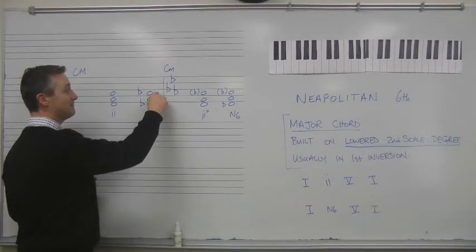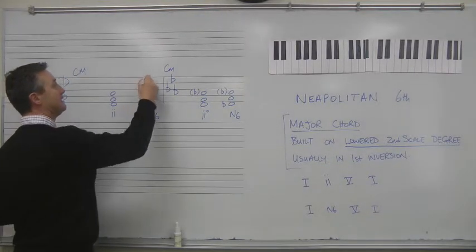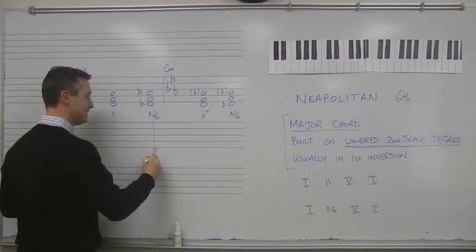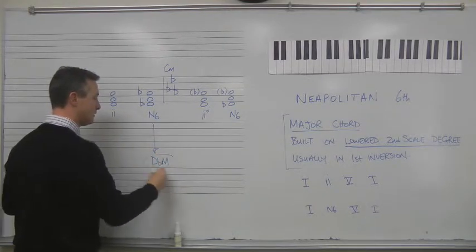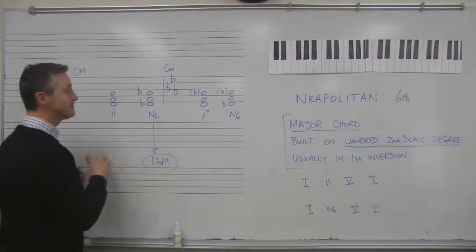So let's build a major chord from D-flat. Well that would be D-flat, F, A-flat. That is a major chord. So this would be the Neapolitan chord. A D-flat major chord would be the Neapolitan chord in C major.